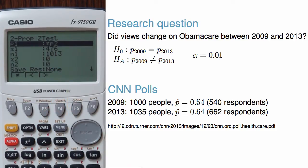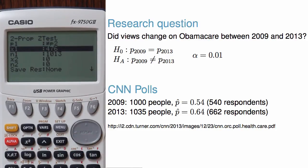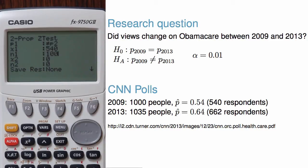We'll be testing whether there is any difference, so we want a not-equal sign, which is already shown here. Next, we'll need to enter the data for each sample. x1 in this case is 540 and n1 is 1000. x2 is 662 and n2 is 1035.